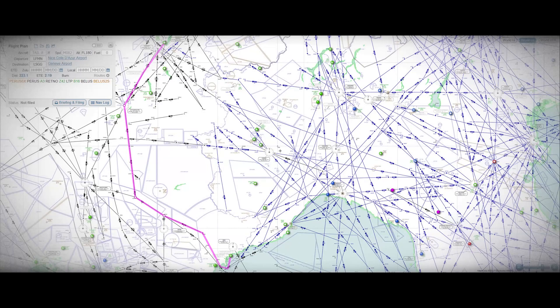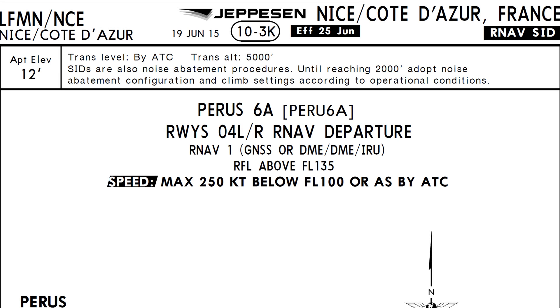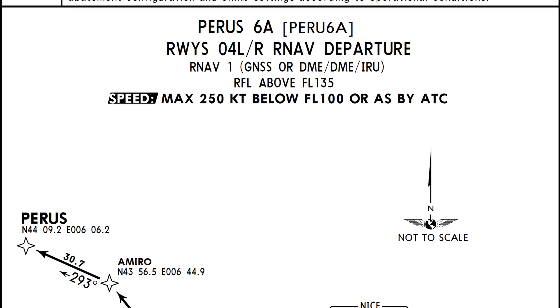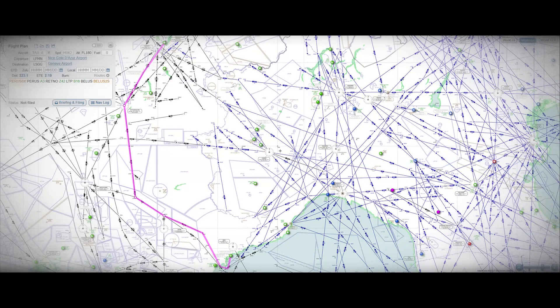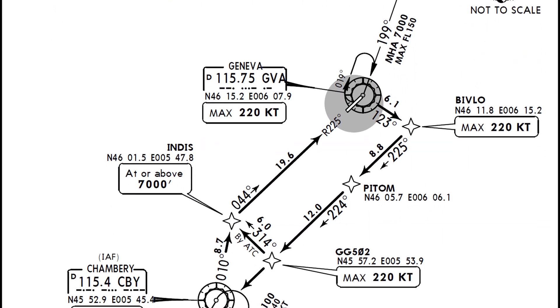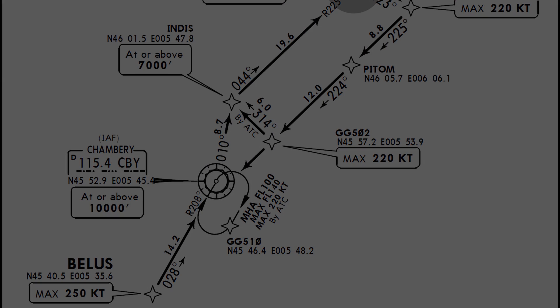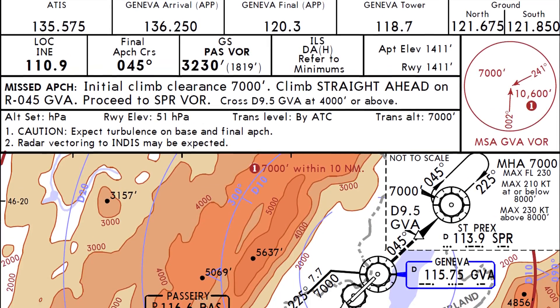In this example we will create a flight plan from Nice to Geneva. We will depart from Nice runway 04 left using the Paris 6A standard instrument departure or SID, and follow the Retno and LTP waypoints before joining the Bellis 1N standard arrival, terminating with the ILS approach for Geneva runway 05.